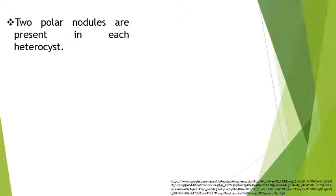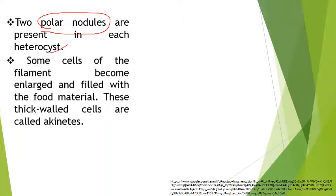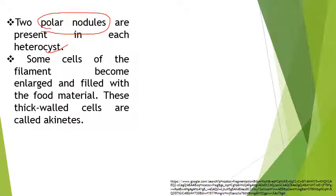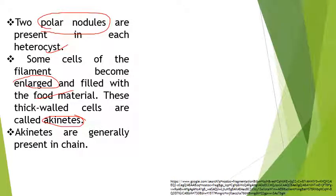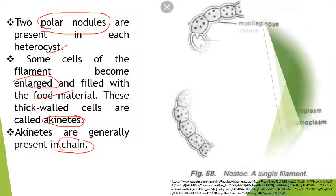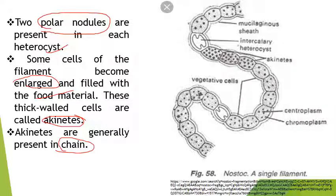Heterocysts have two polar nodules — these are peg-like projections in the cell. Some cells of the filament become enlarged and filled with food materials. These thick-walled cells are known as akinetes. Akinetes are always present in chains. They act as a reservoir of food material. Vegetative cells are thin-walled and have less stored food material.